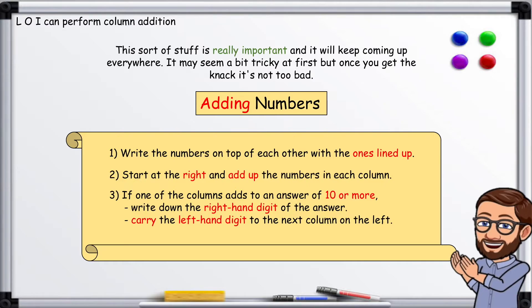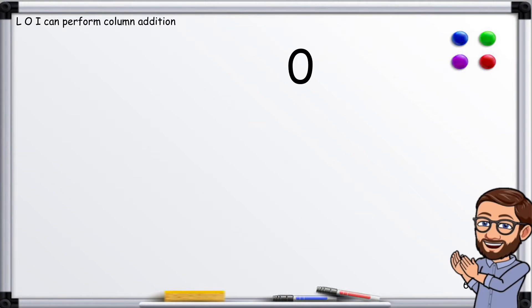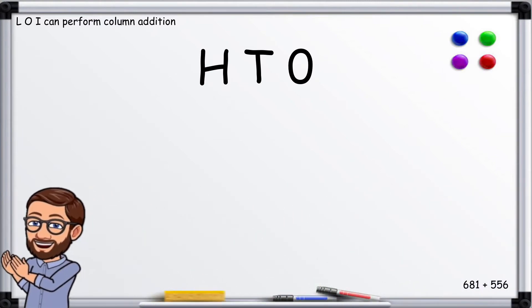Example: work out 681 plus 556 without using a calculator. So first we put our columns out: ones, tens, and hundreds.